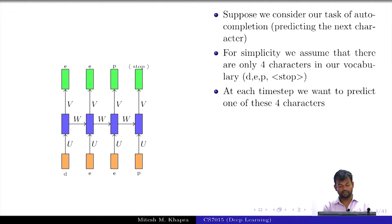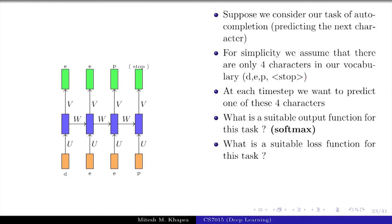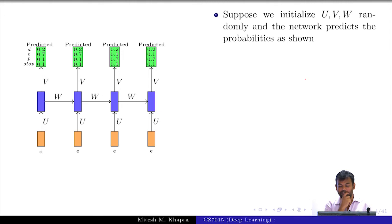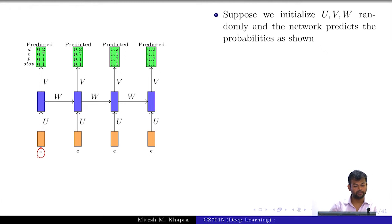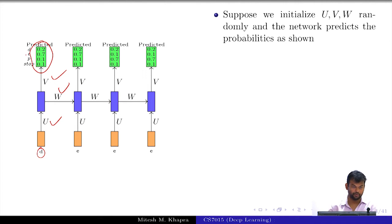At each time step, I want to predict one of these things. What is a suitable output function for this task? Softmax. What is the suitable loss function? Suppose we initialize U, V, W randomly and the network predicts the following probabilities. I have fed it D as the input, I have just started training, so U, W and V are all randomly initialized weight matrices, and it has predicted this probability distribution.